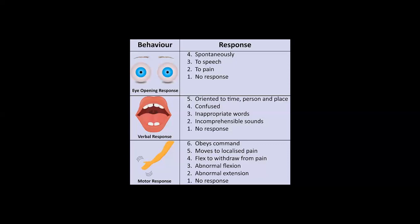Now, if we combine the three responses, for example, eye opening is 3, verbal is 4, and motor is 6, the total is 13. A score of 13–15 is classified as mild, meaning the patient's level of consciousness is relatively okay — not bad.